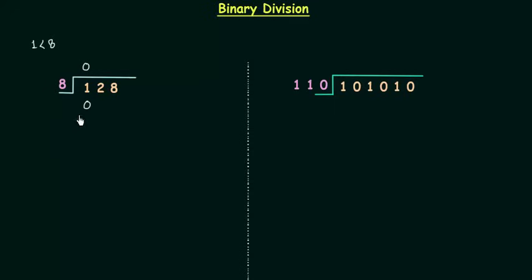8 times 0 is 0 and for remainder I will subtract this 0 from 1. 1 minus 0 is 1. This 2 will come down and we have 12.